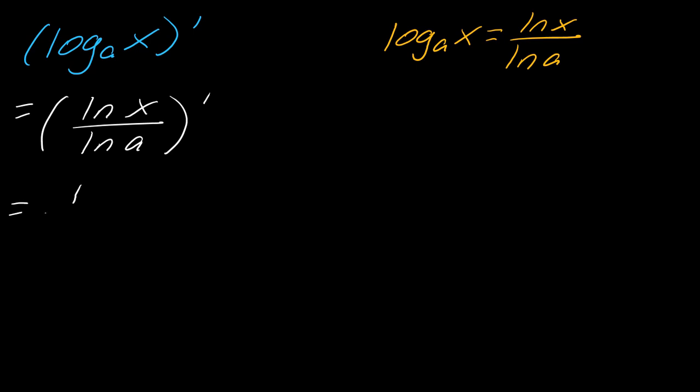If I take the derivative of this, this one over the natural log of a is really just a constant, so I can set it to the side for a moment. The derivative of the natural log of x is just one over x. And so we're actually done. This is going to equal one over x times the natural log of a, and there's my derivative.